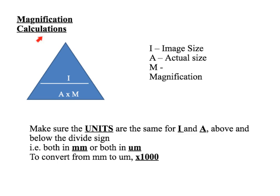A very common calculation is magnification. I like to use the triangle I-A-M, where I is the image size, A is the actual size, and M is the magnification. The image size is whatever you have on the screen — a picture or photograph. A is the actual size of the cell, usually very small. M is how many times bigger the image is than the actual size.